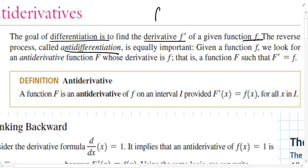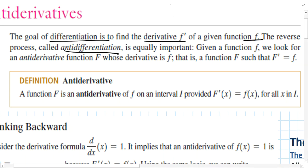In anti-differentiation, we are given f' and we've got to go find the original function that would have produced the derivative f'. This process of anti-differentiation is not exclusive to existing derivatives — sometimes we're given an actual function and it's beneficial to find the antiderivative of it. We don't usually use the f' notation for our given information. Instead, we're given a function f, and we're looking for the antiderivative, which we identify with a capital F.